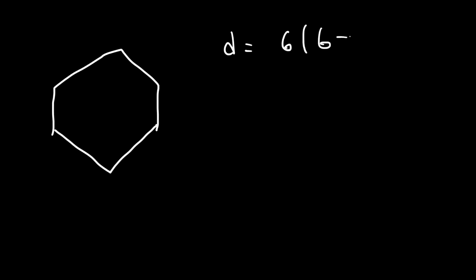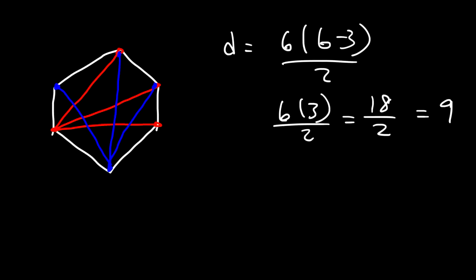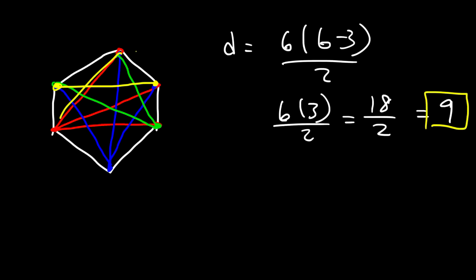Now what about a hexagon? It's going to be 6 times 6 minus 3 divided by 2. 6 minus 3 is 3, and 6 times 3 is 18, and 18 divided by 2 is 9. Starting from the top point: 1, 2, and 3. From the bottom: 4, 5, and 6. From the next point: 7 and 8. And from the last point: 9. So there are 9 diagonals for a hexagon.